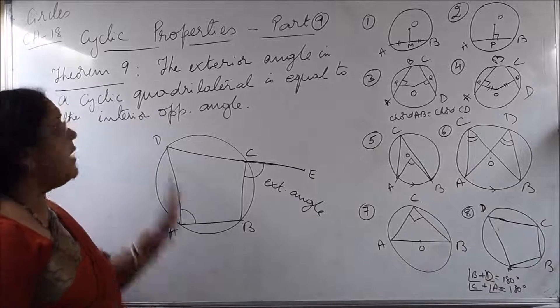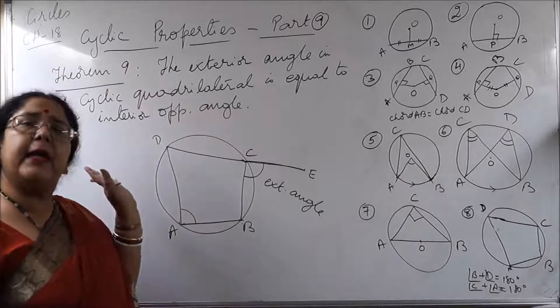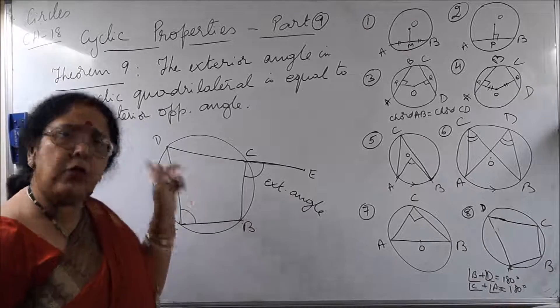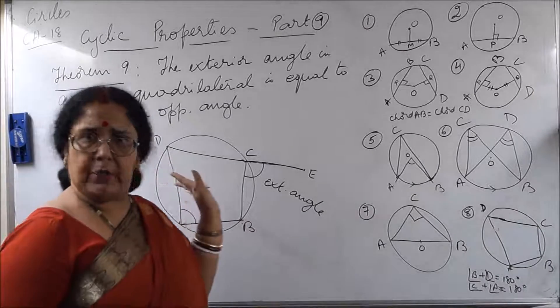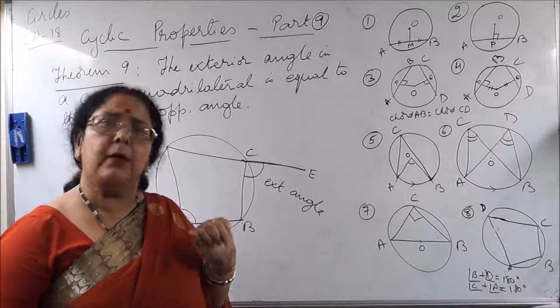So we have verified that the exterior angle in the cyclic quadrilateral is equal to the interior opposite angle. Is it clear, children?